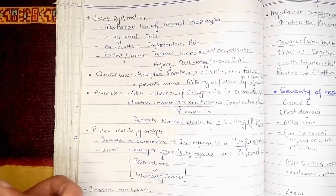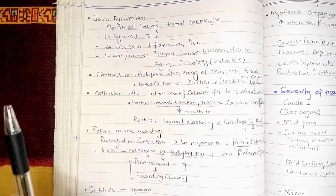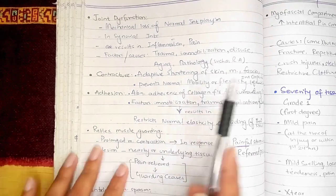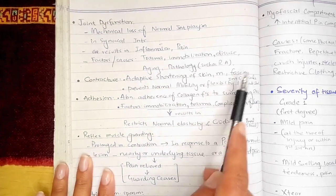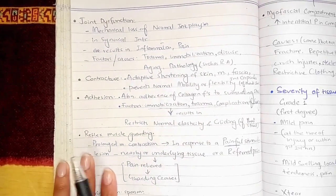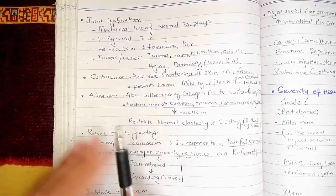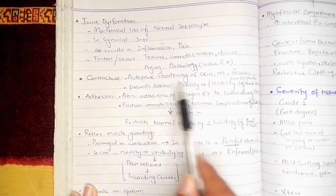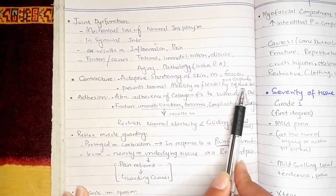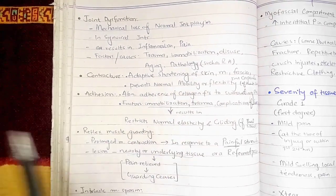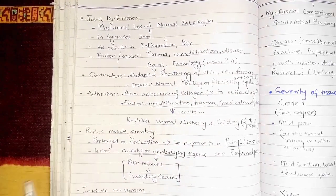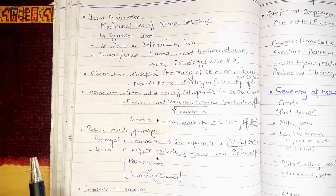Then we have contracture. Contracture is the adaptive shortening of the skin, muscle, fascia, or joint capsule. This contracture prevents the normal mobility or flexibility of the structure in which it is occurring.